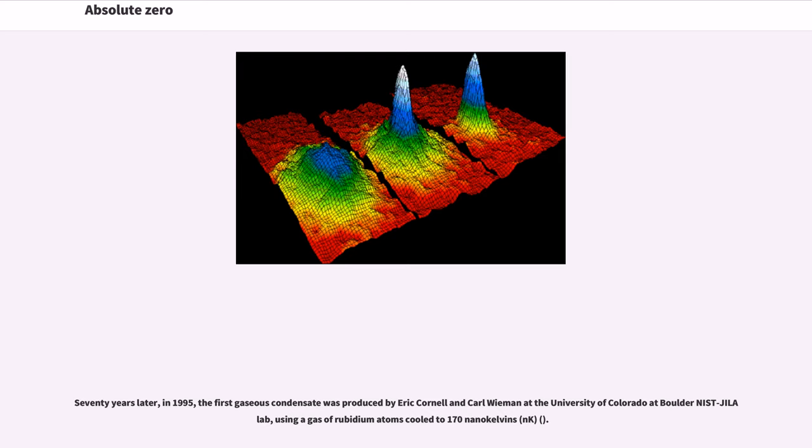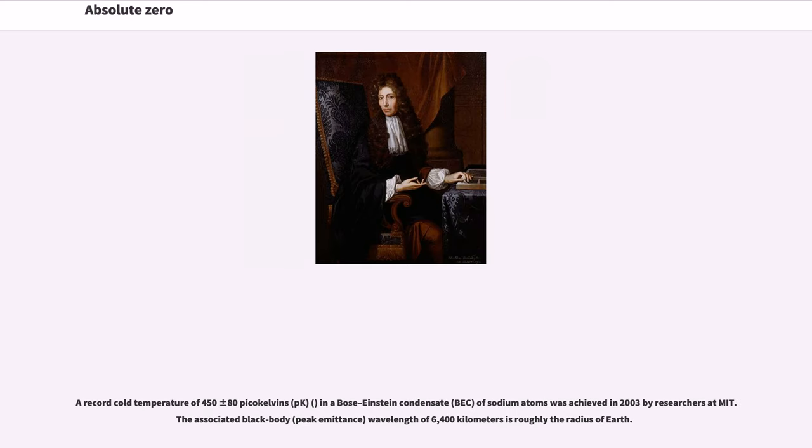Seventy years later, in 1995, the first gaseous condensate was produced by Eric Cornell and Carl Wieman at the University of Colorado at Boulder NIST-JILA lab, using a gas of rubidium atoms cooled to 170 nanokelvin. A record cold temperature of 450 plus or minus 80 picokelvin in a Bose-Einstein condensate (BEC) of sodium atoms was achieved in 2003 by researchers at MIT.